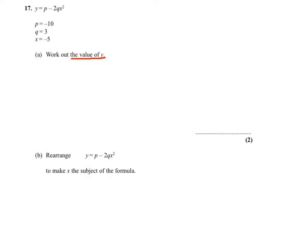So you would get y equals p, which is minus 10, minus 2 times q, which is 3, times x squared, so it's minus 5 squared.